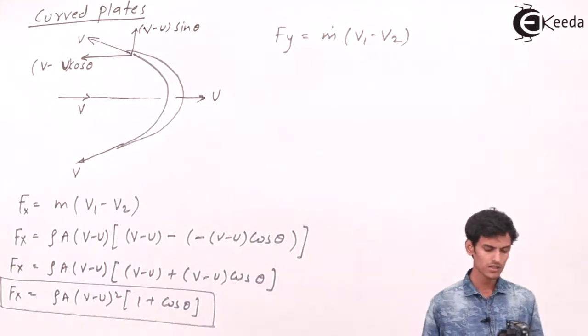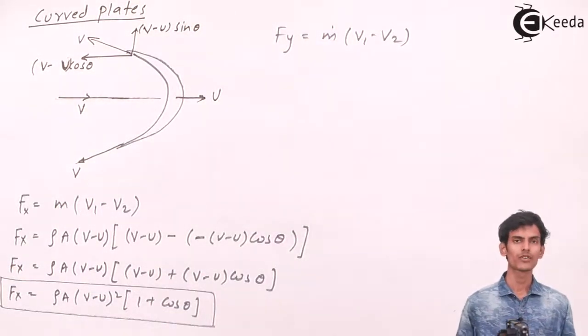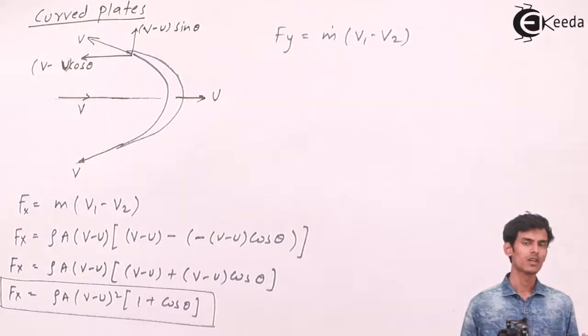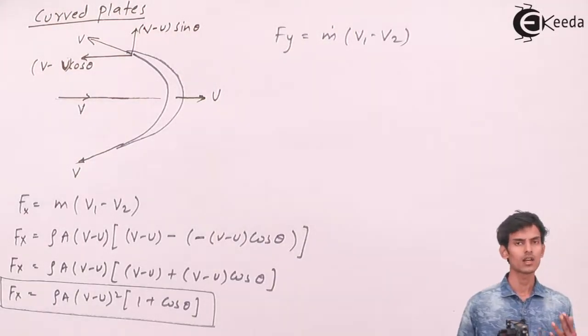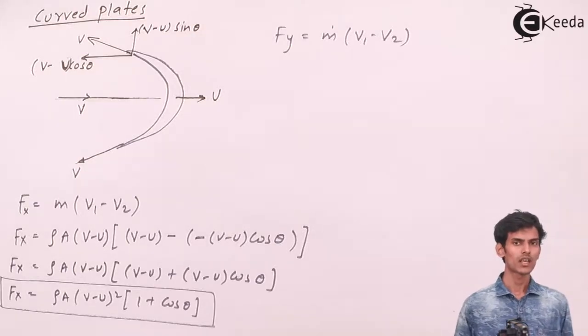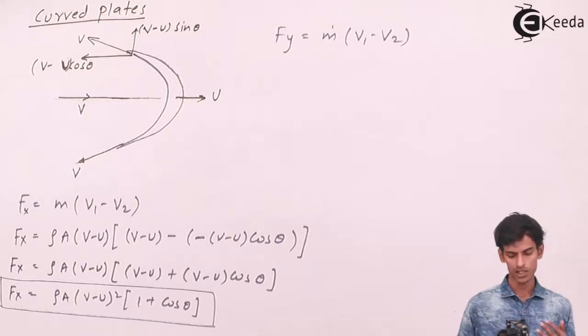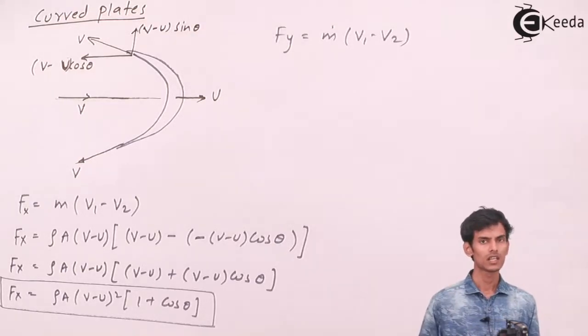Now let's calculate the y component of force. The formula remains the same: y component of force = m(V1 − V2), where V1 and V2 are now the y components of velocity. V1 is the y component of velocity entering the plate and V2 is the y component of velocity leaving the plate.